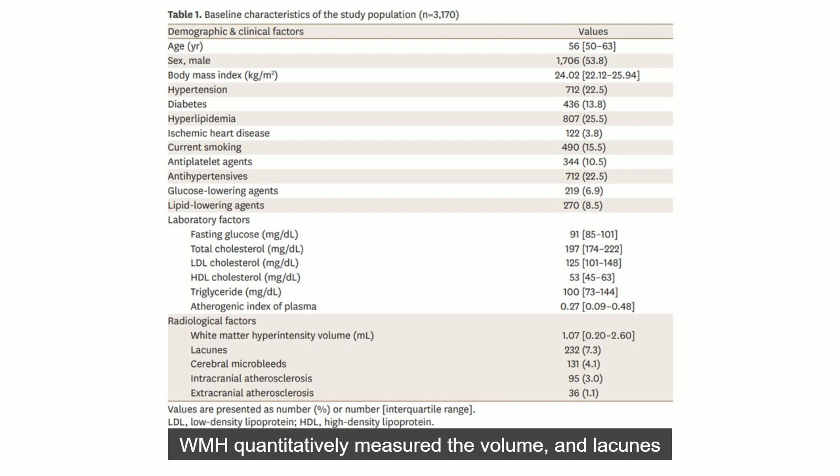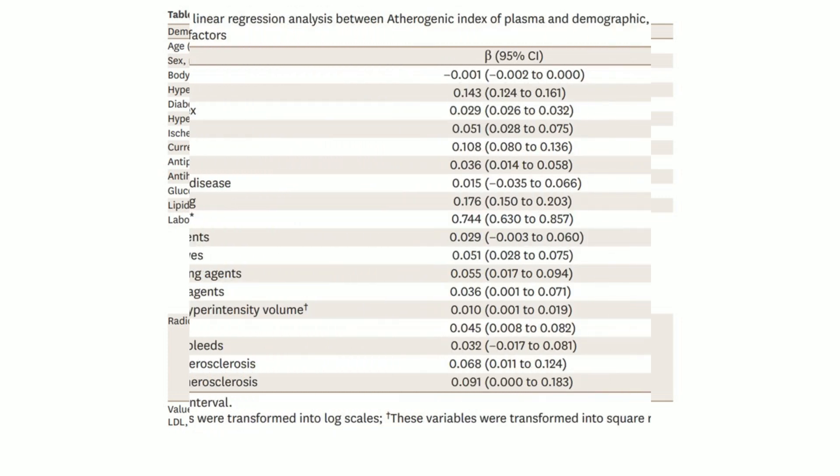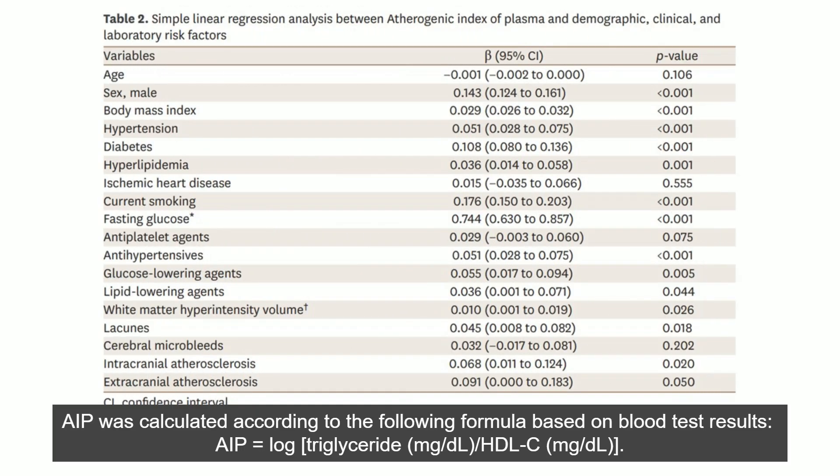White matter hyperintensity was quantitatively measured by volume, while lacunes and cerebral microbleeds were qualitatively evaluated for presence. AIP was calculated according to a formula based on blood test results.